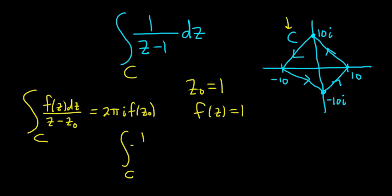So we have the integral over C of 1 over z minus 1 dz. And you can see 1 is clearly here. There's no problem. It's an interior point. All the conditions are satisfied. So using the formula, we have 2πi times f(z naught). So f(1). Well, f(1) is just 1. So we end up with 2πi.